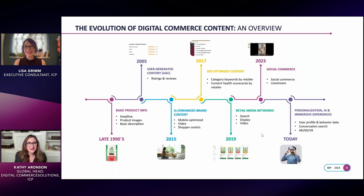Then content got even more sophisticated — it started getting SEO optimized. Around 2017 it really became popular, where brands realized they needed to optimize content in order to rank higher in search. Then around 2015, and really exploding by 2019, you had all the content in retail media networks — all the paid advertising on the digital shelf.